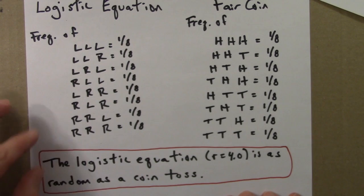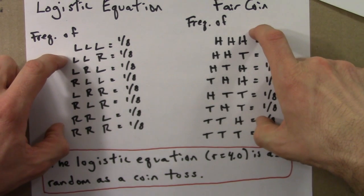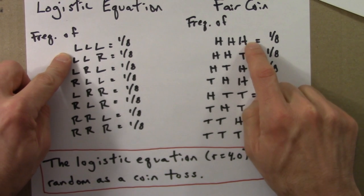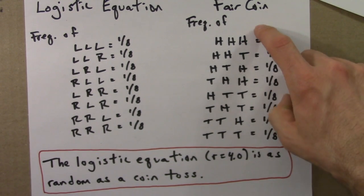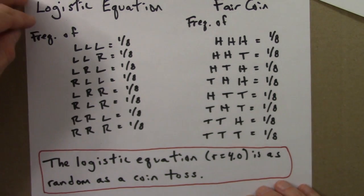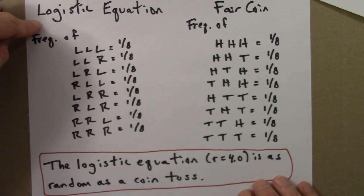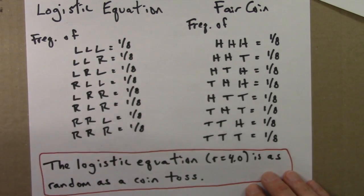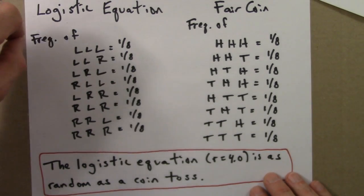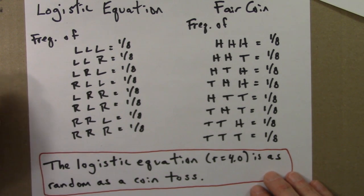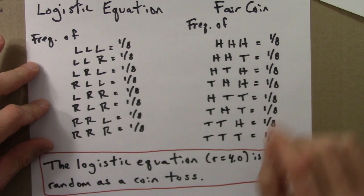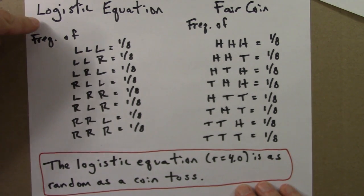Here's another way to think about what this means. Suppose I generated two symbol sequences — the names of the letters don't matter; we could use H's and T's or 0's and 1's. One very long sequence generated by tossing a coin again and again. The other generated by iterating the logistic equation and writing it in symbolic form. If I handed you those two sequences and asked you to tell me which was which, there would be no way to tell those two sequences apart.